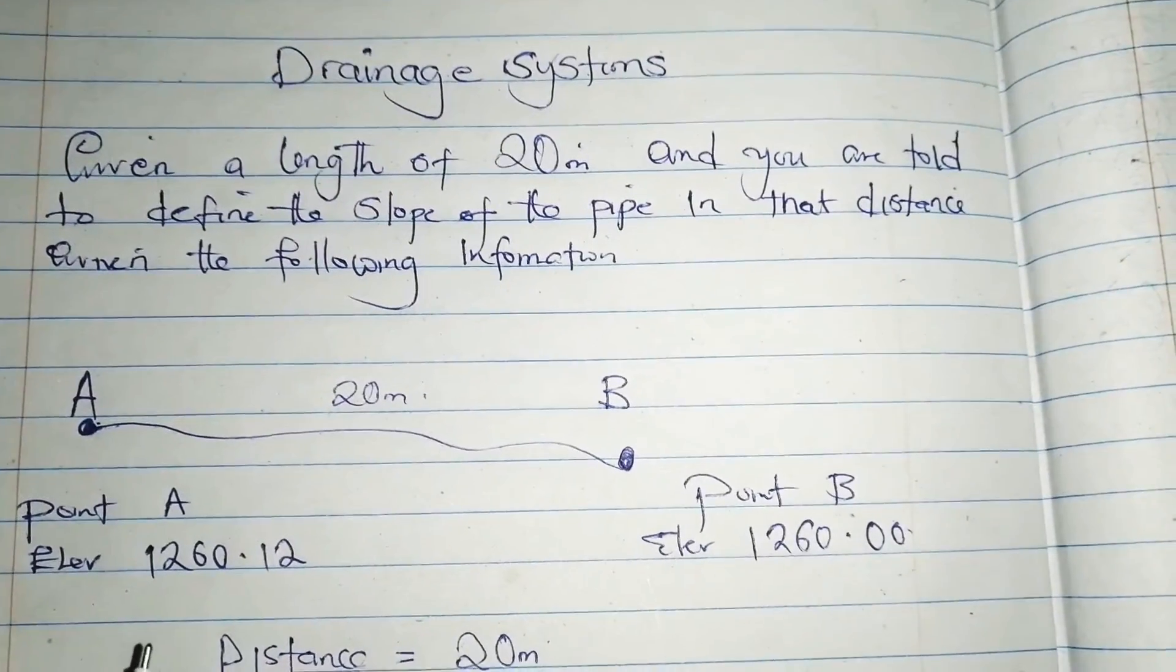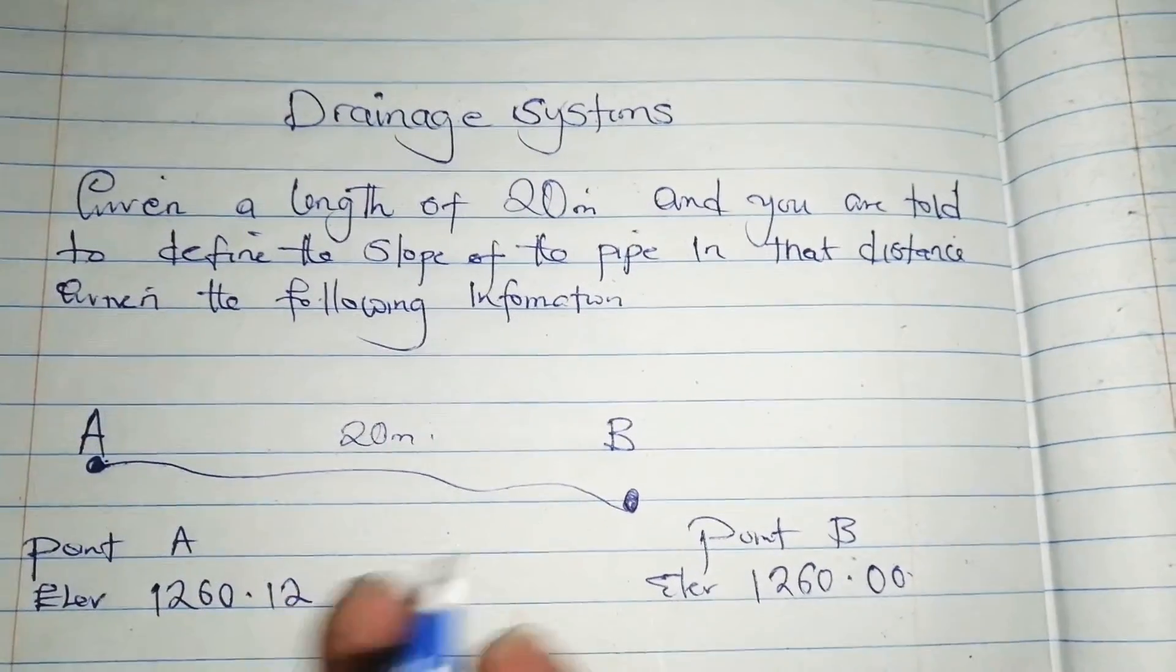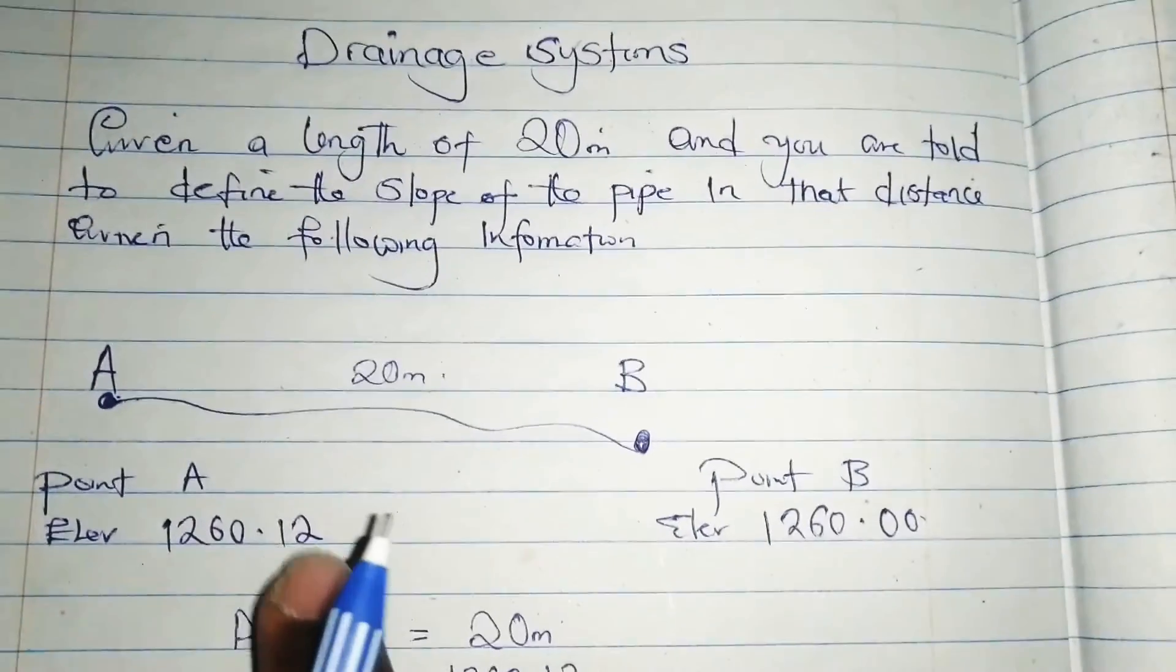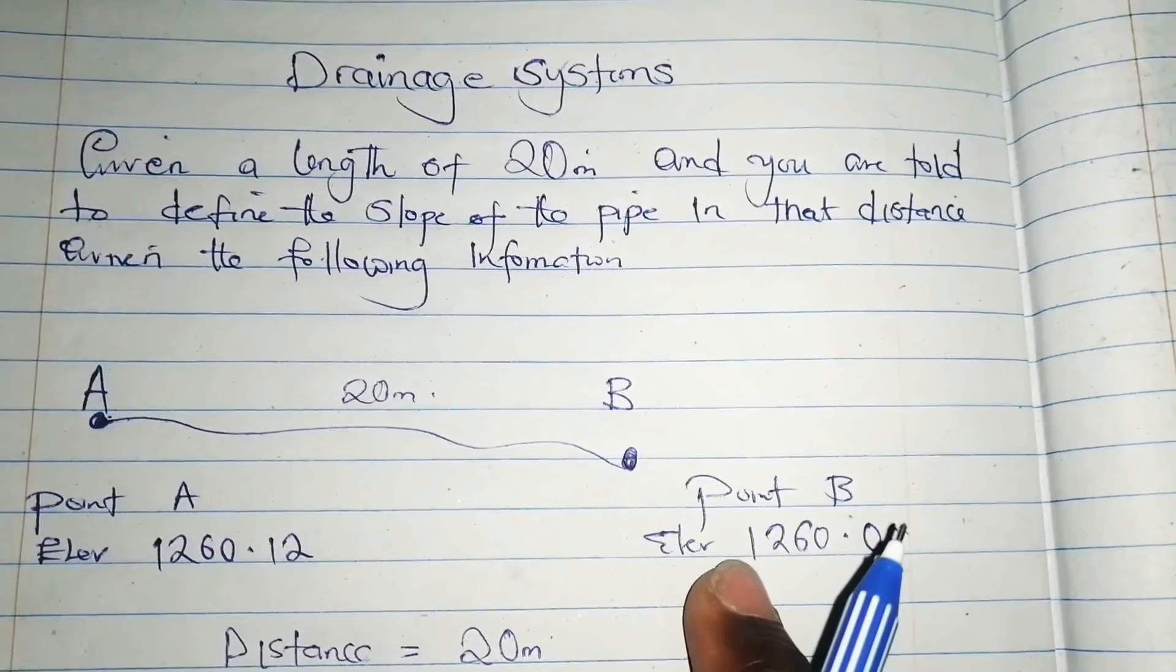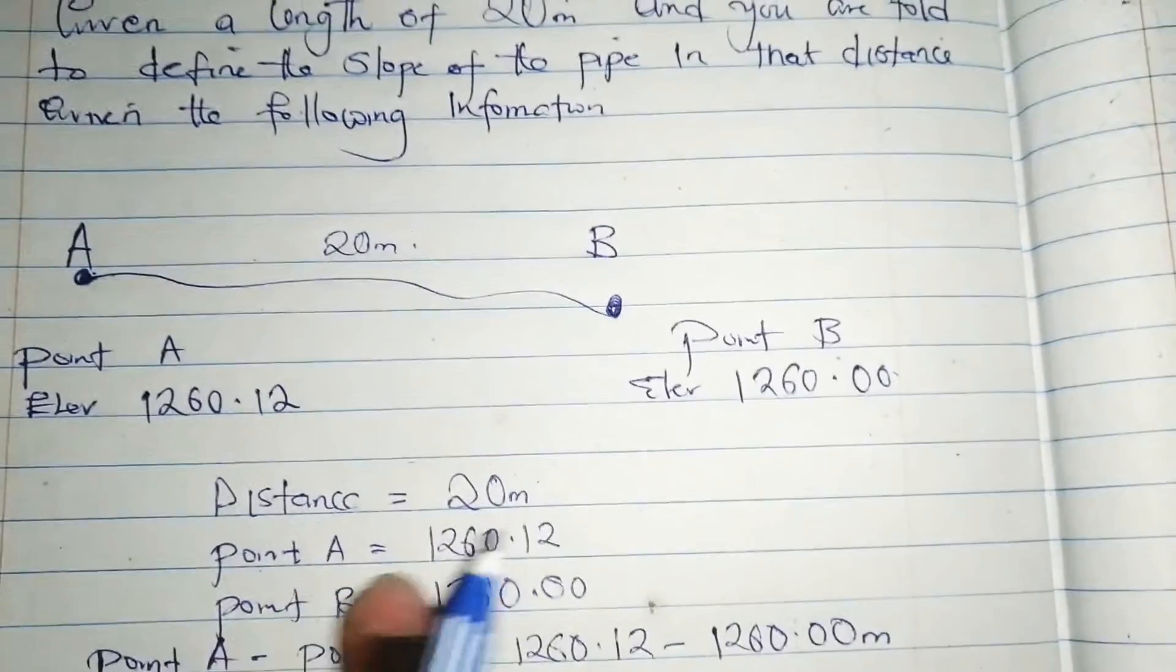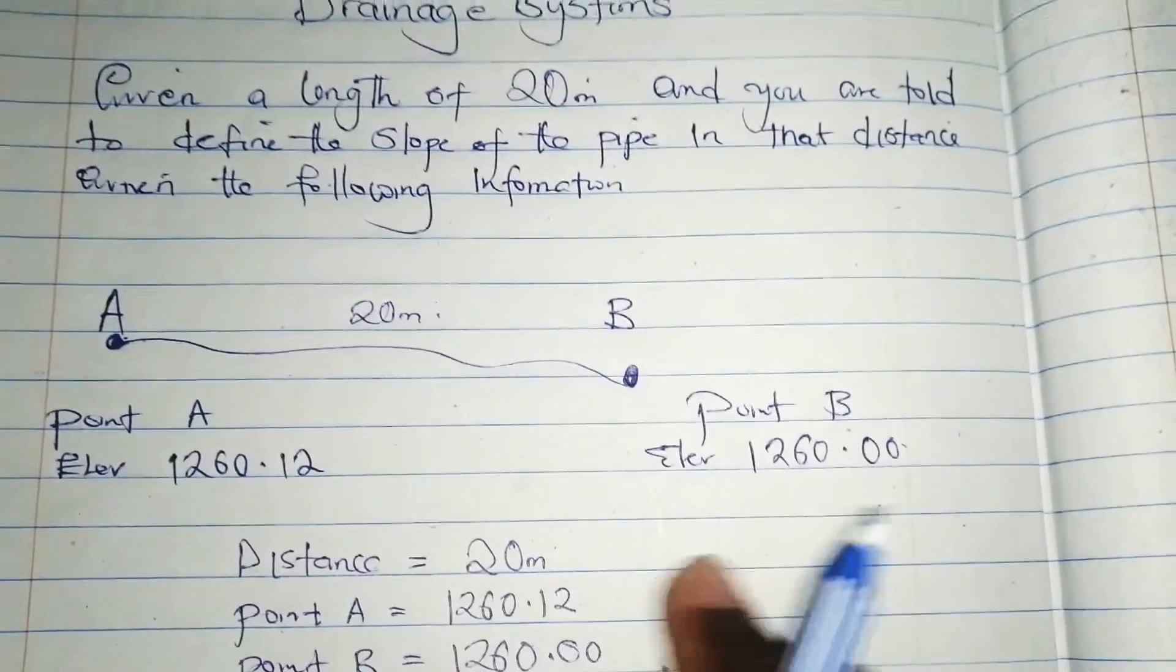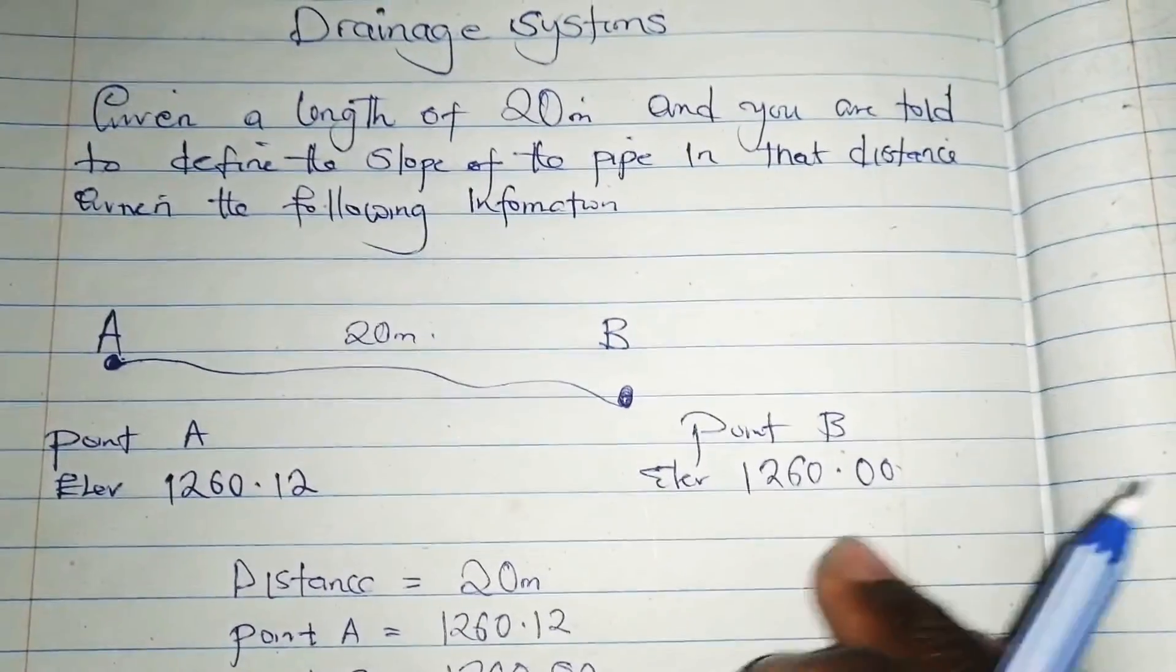Now the distance between A and B is 20 meters. You are told to define the slope of the pipe in this interval. The information you have is the distance of 20 meters, point A elevation, and point B elevation. How do you calculate the slope of that drainage from point A to point B? Let's begin.